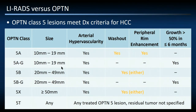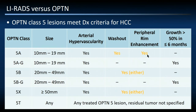Here is a table showing how you get to an OPTN 5 classification. Many of the same features apply as in LIRADS: size, hypervascularity, presence of washout and capsule-like enhancement, or threshold growth. But notice that in OPTN 5, for small lesions between 10 and 19 millimeters, you not only need hypervascularity but you must have both washout and capsule-like enhancement — this is a yes-and-yes requirement. Alternatively, hypervascularity and threshold growth qualifies. These criteria cannot be met by one alone. For larger lesions, either washout or peripheral rim enhancement qualifies at the 5B or 5X level.